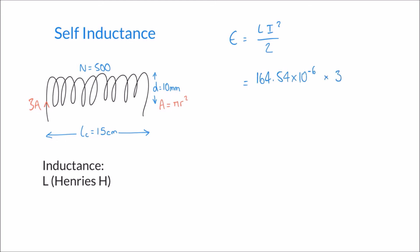We multiply by the current squared, so that's 3 squared, all over 2. Calculating that gives an answer of 7.404 times 10 to the minus 4 joules. Since 10 to the minus 4 doesn't correspond to a standard prefix, we can adjust it.